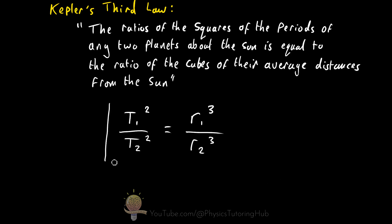So this is Kepler's third law in equation form. It is the ratio of the squares of the periods of two planets in the solar system being equal to the ratio of the cubes of the average distances of both planets from the Sun.